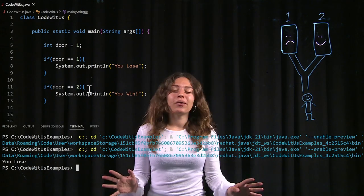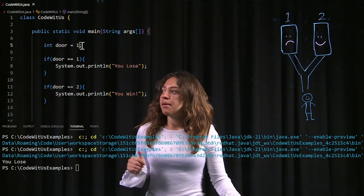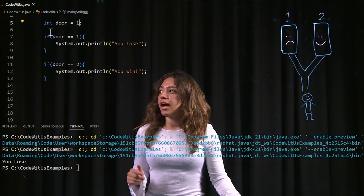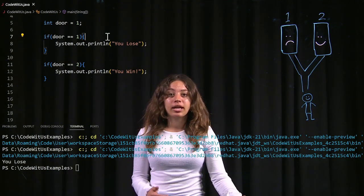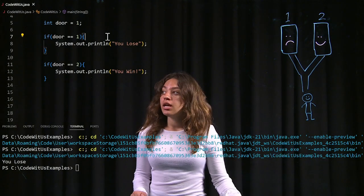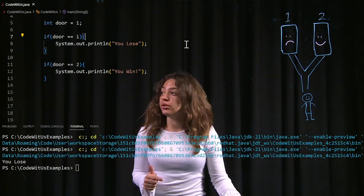And as you can see over here, I lost the game. So what's going on in this code? I set my door equal to one. I then go to my first conditional statement and check if the door I picked is equal to door number one. It is equal to door number one, so I'm going to print out you lose.